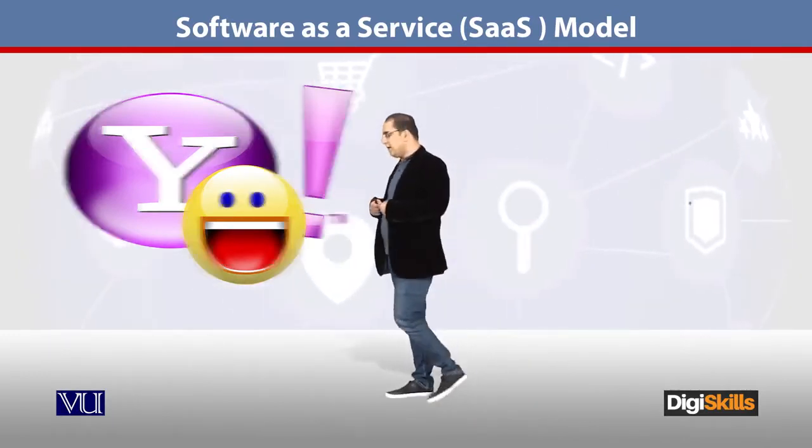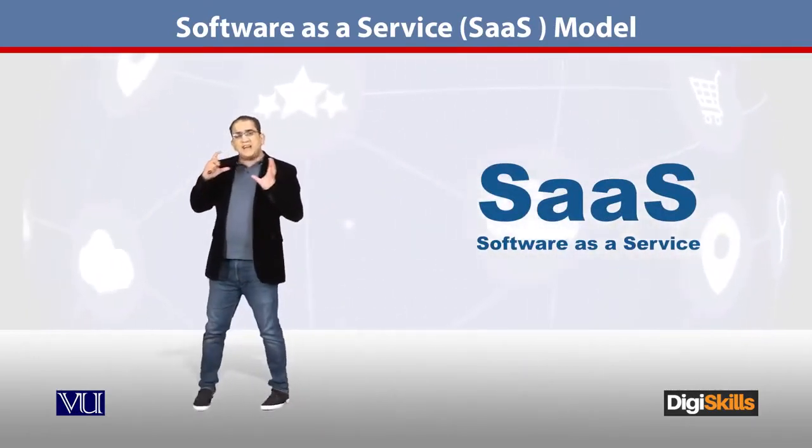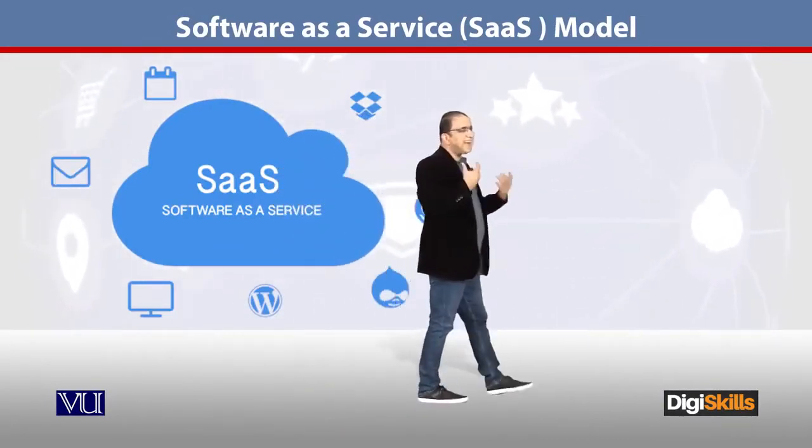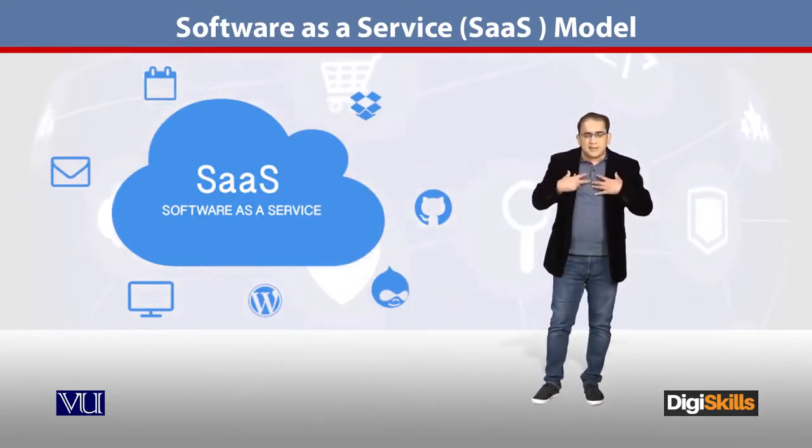जो SaaS कहता है वो यह कहता है कि it will just act like a third party tool — एक ऐसी machine है जहाँ पे आपके जो software आपने use करने हैं वो वहाँ पड़े हैं, और आप उस third party host को बिल्कुल वैसे ही use करें जैसे आपका अपना computer है। इसको कहते हैं basically cloud। Cloud से मुराद, یا SaaS سے مراد یہ ہے کہ جو software actually میری computer پے ہونے چاہیے تھے کیونکہ انہیں مجھے use کرنا تھا — use تو ابھی بھی مَیں ہی کر رہا ہوں، لیکن فرق صرف یہ ہے کہ ان software کی installation میرے local PC پے ہونی ضروری نہیں ہے۔